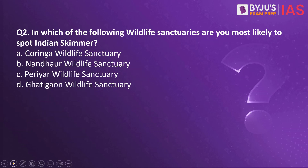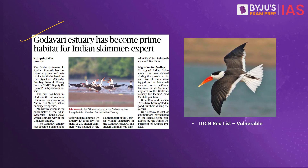Moving on to question number 2. In which of the following wildlife sanctuaries are you most likely to spot the Indian skimmer? Option A - Koringa Wildlife Sanctuary; Option B - Nandhaur Wildlife Sanctuary; Option C - Periyar Wildlife Sanctuary; Option D - Ghategaon Wildlife Sanctuary. The context: an article in The Hindu newspaper today has a reference to the Indian skimmer.